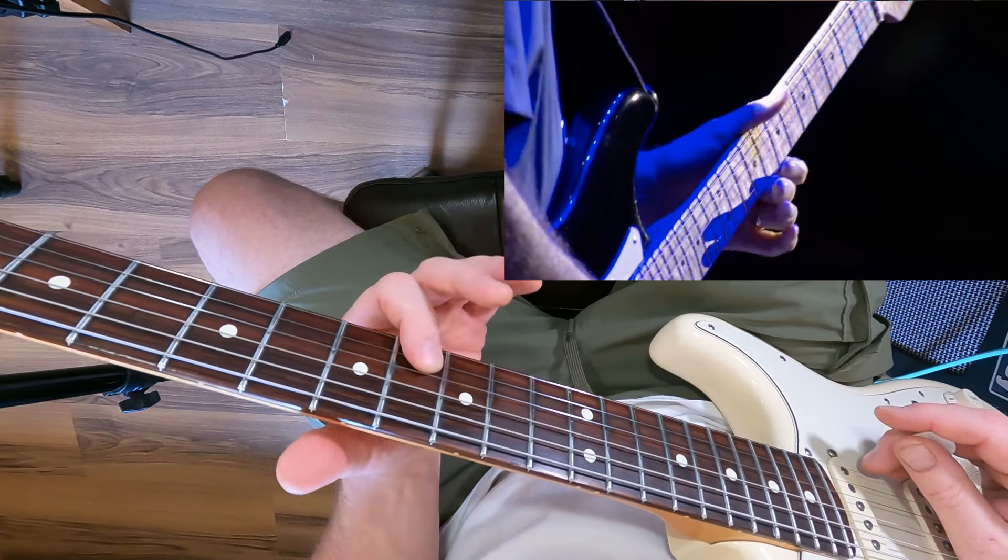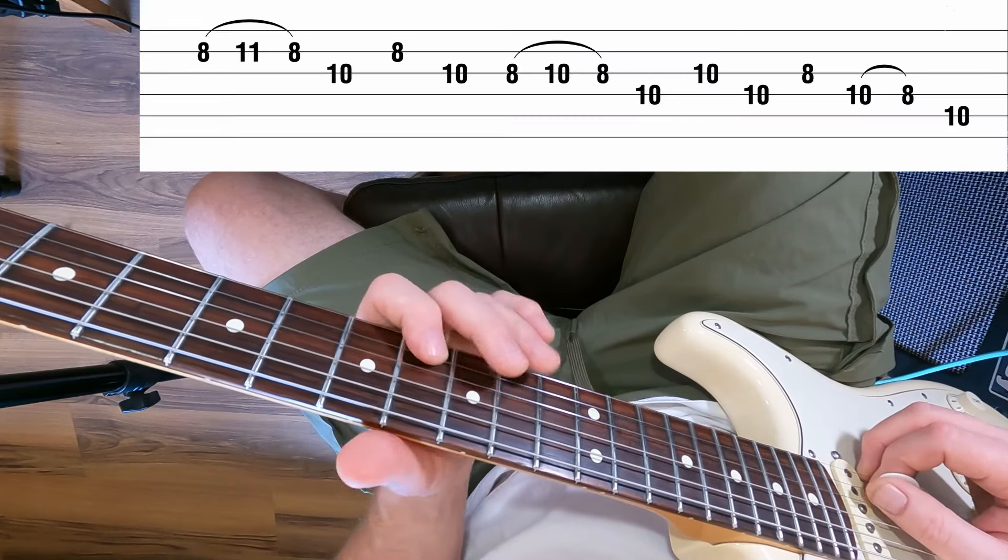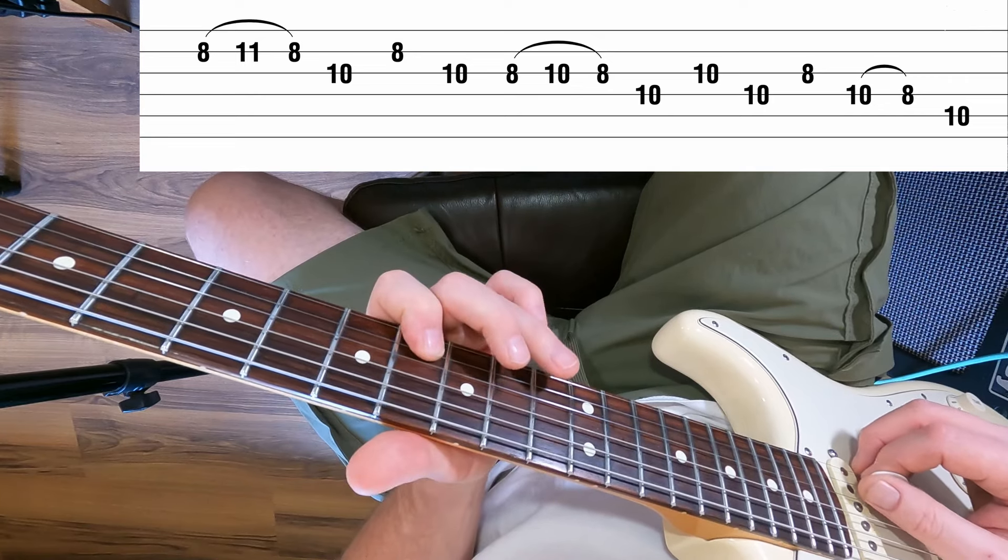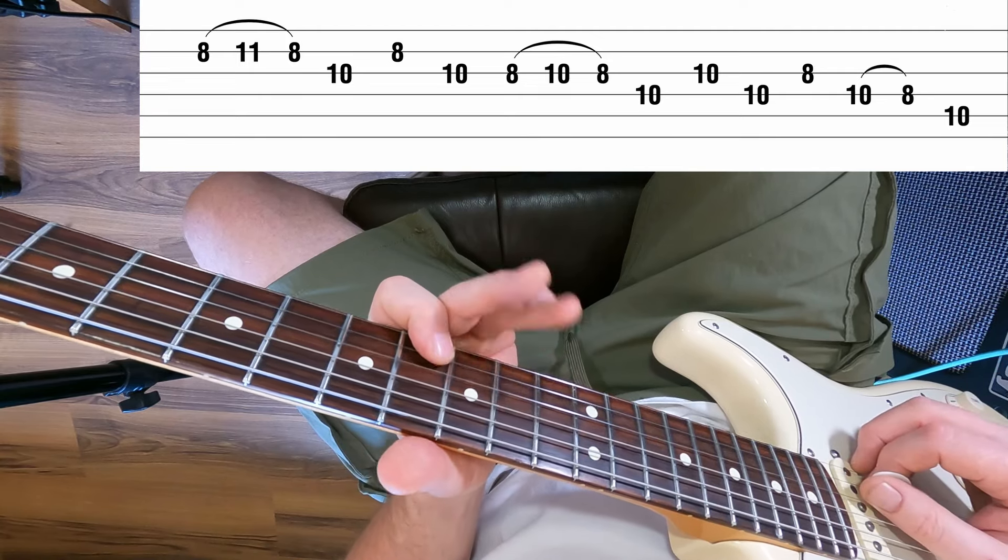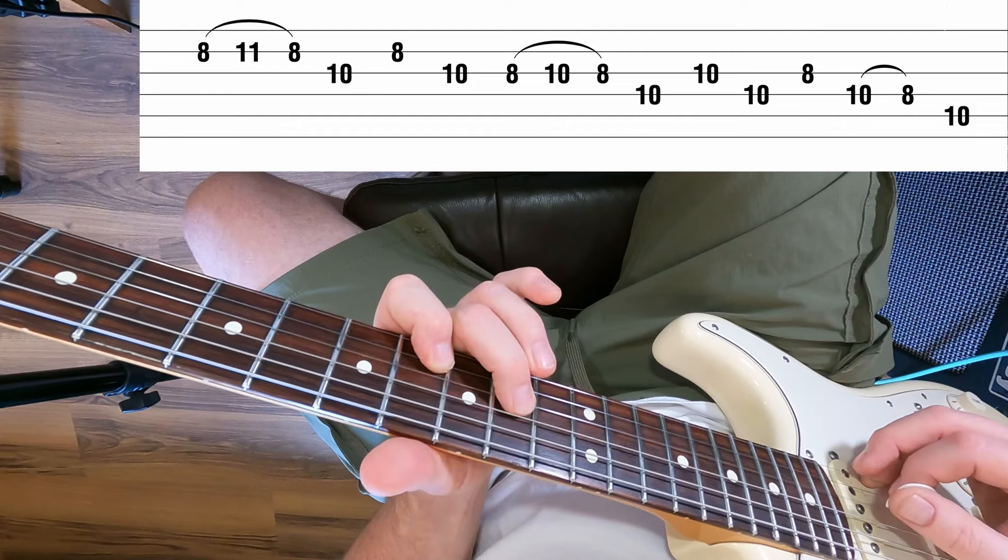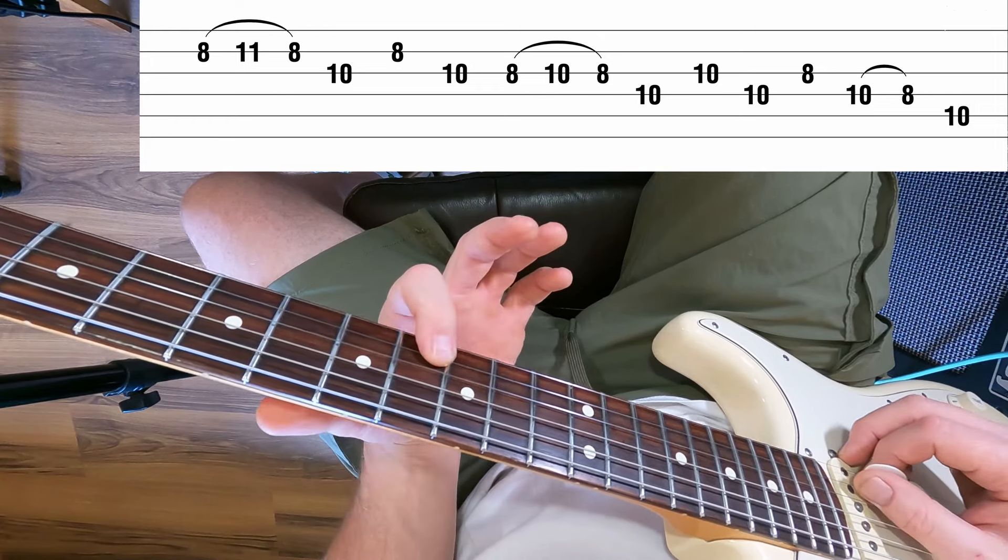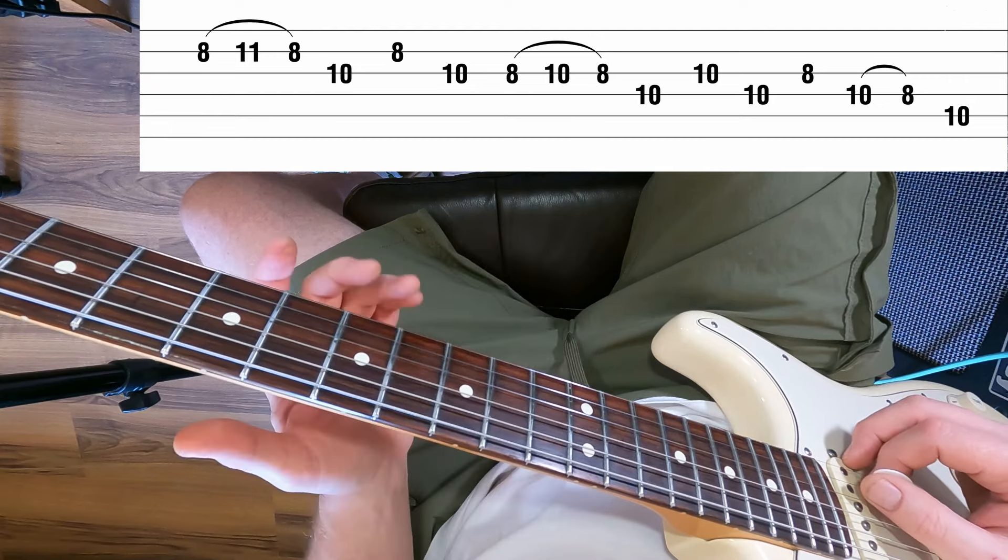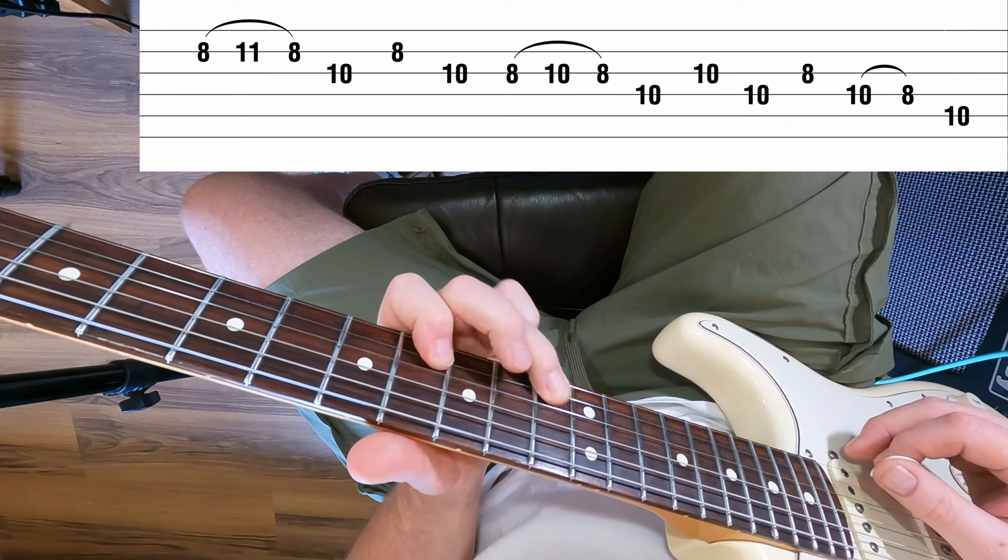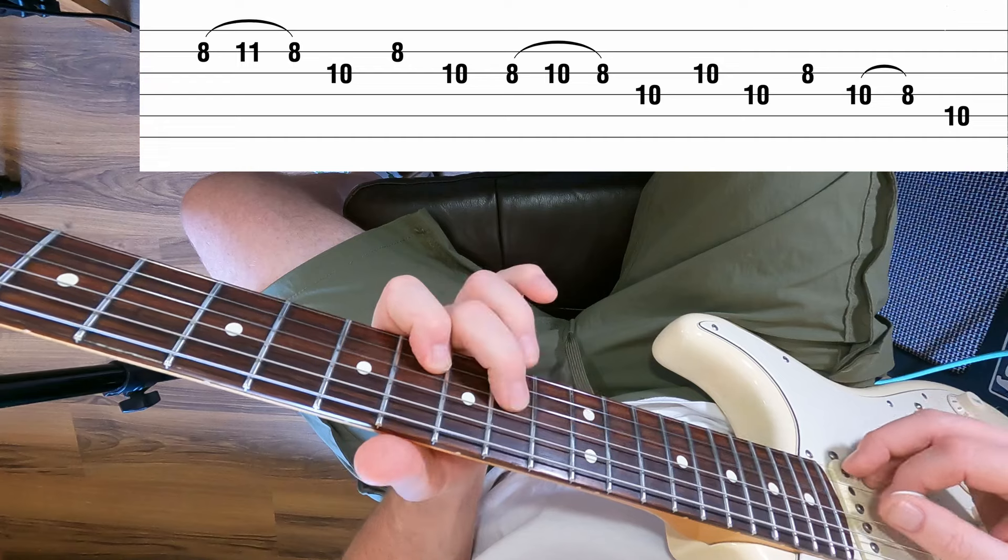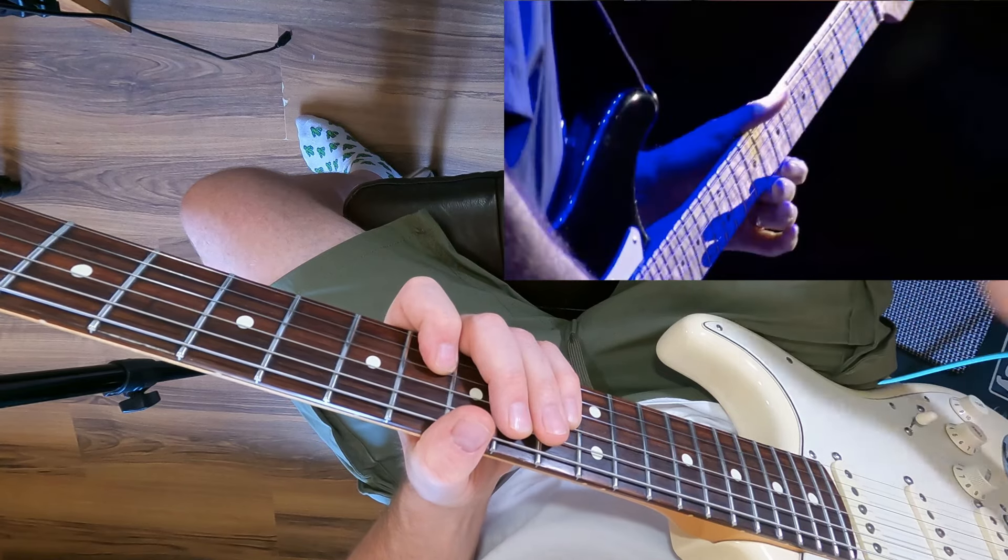We're starting on the five chord, so we're going to start on the G, B string eighth fret. It starts with a hammer-on pull-off to the 11th fret. I'm going to start with a down pick, then we're going to come up with our middle finger to the 10th fret of the G string, then rock back to the eighth fret on the B. That's the first part of the sequence.